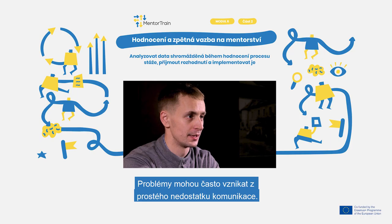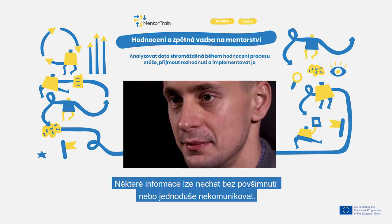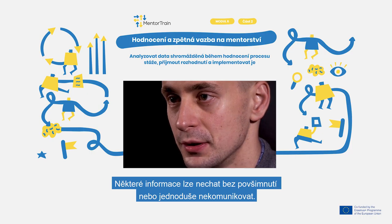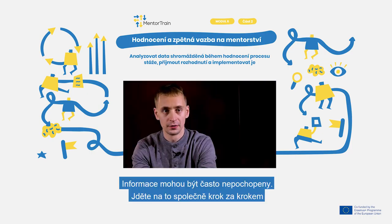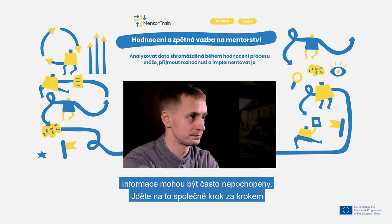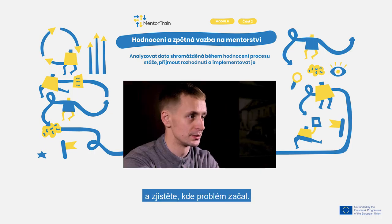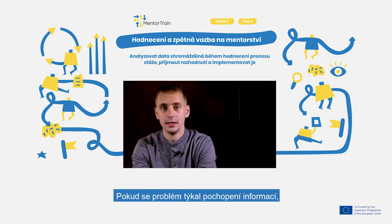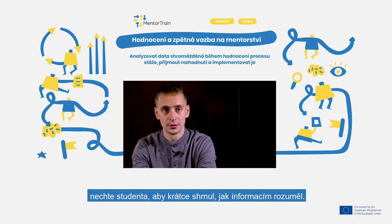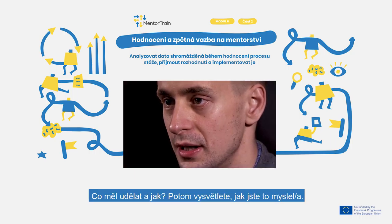Often problems can arise from simply a lack of communication. Some information can be left unnoticed or simply not communicated, and often information can be misunderstood. Go through it step by step and see where the problem started. If the problem was about understanding the information, let the student make a short summary of how they understood it, what they had to do and how, then explain how you meant it.